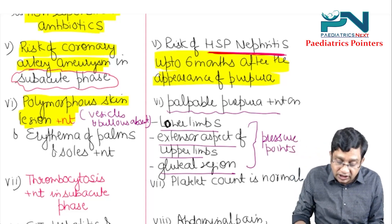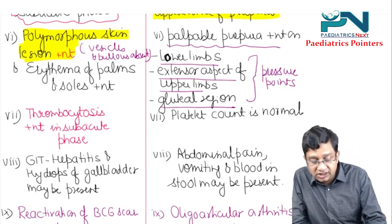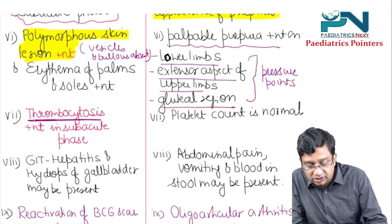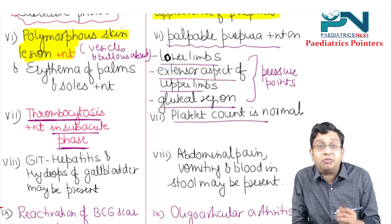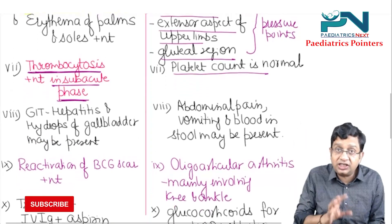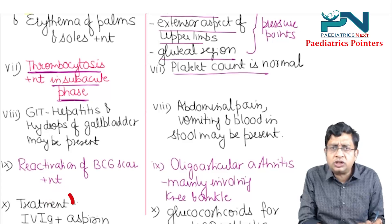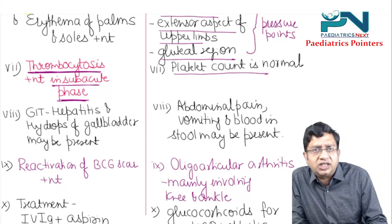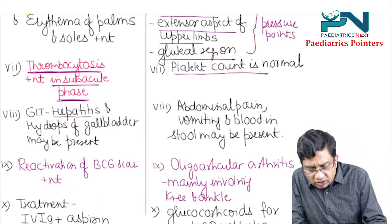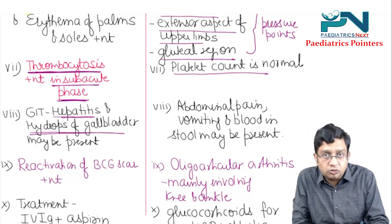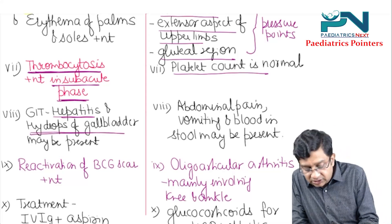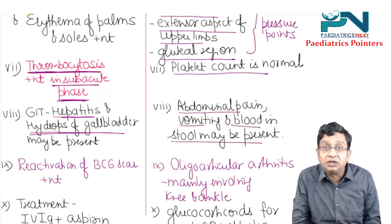In Kawasaki disease, there is thrombocytosis in the sub-acute phase, but in HSP the platelet count is normal. Regarding GIT involvement, Kawasaki can rarely involve the GIT with hepatitis and hydrops of the gallbladder. In HSP, there is abdominal pain, vomiting, and blood in the stool may be present.